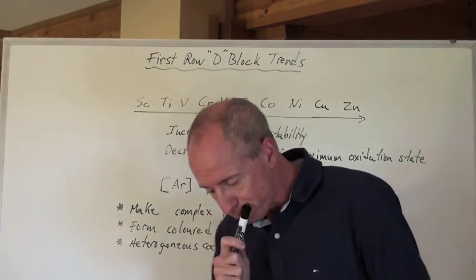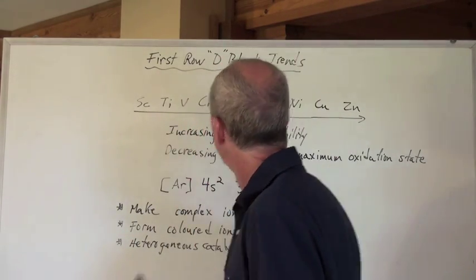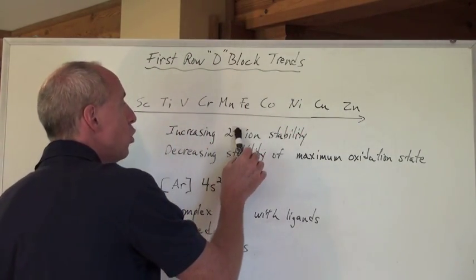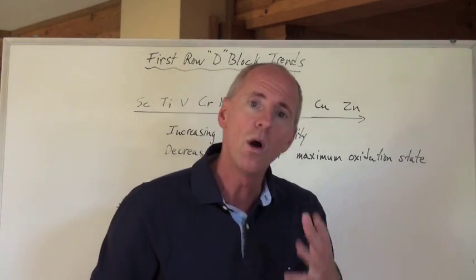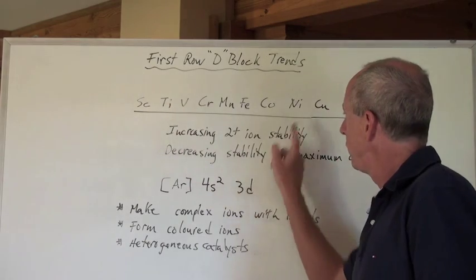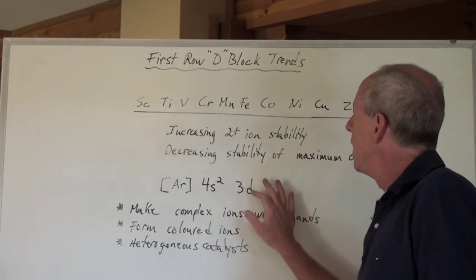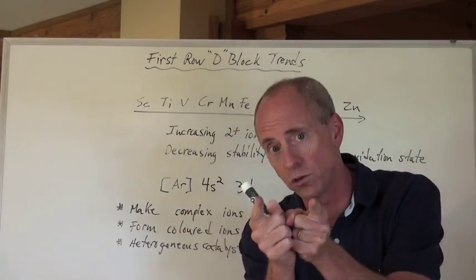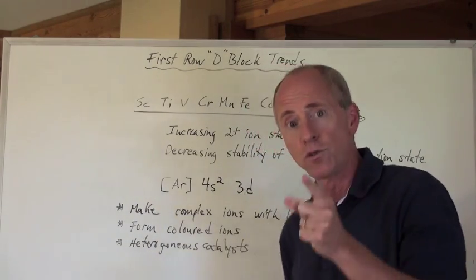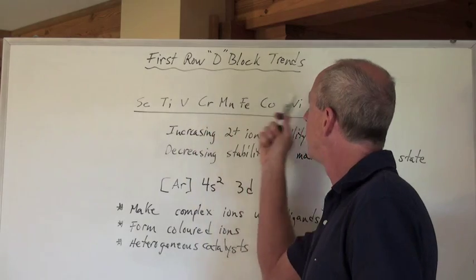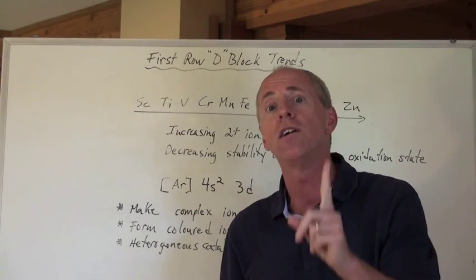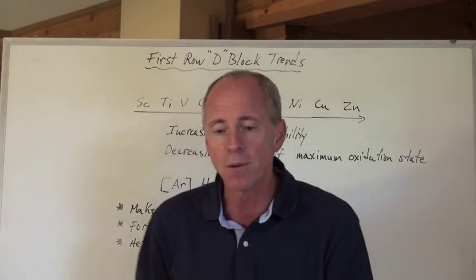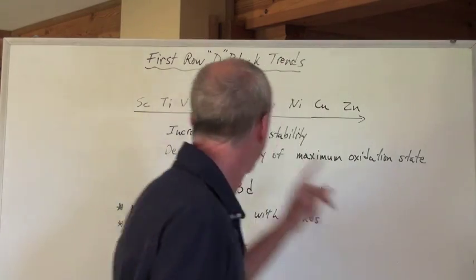So what are the properties going across here for these transition elements? First of all, they have an increasing 2+ ion stability. Every one of them would be 3d1, 2, 3, all the way to 10. To make ions out of them, you don't take away the D electrons — you first take away the 4s electrons, because those are the outermost electrons. By removing both 4s electrons, you can turn every one of these into a 2+ ion, leaving whatever number of 3d electrons they have. They all can have a 2+ charge all the way across.